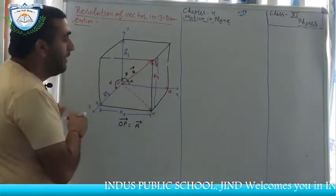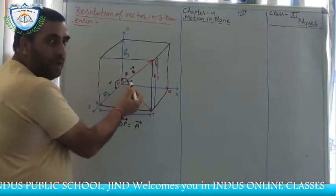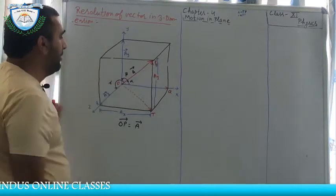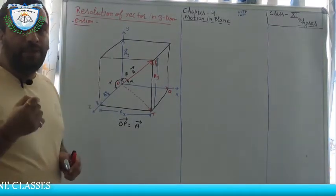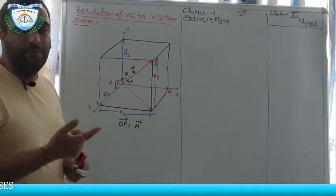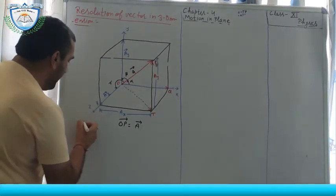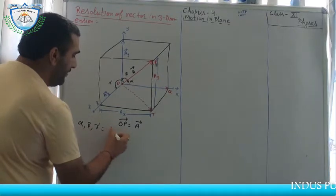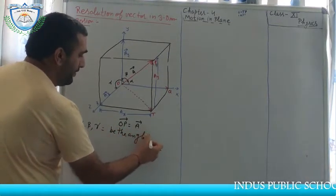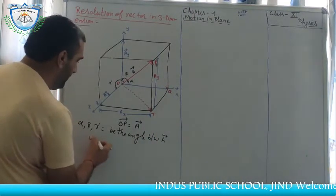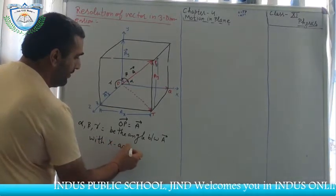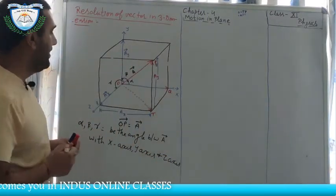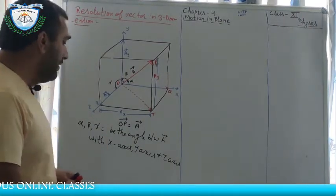Suppose the given vector A (OP vector) makes an angle alpha with the x-axis, angle beta with the y-axis, and angle gamma with the z-axis. So let alpha, beta, and gamma be the angles made by vector A with the x-axis, y-axis, and z-axis respectively.